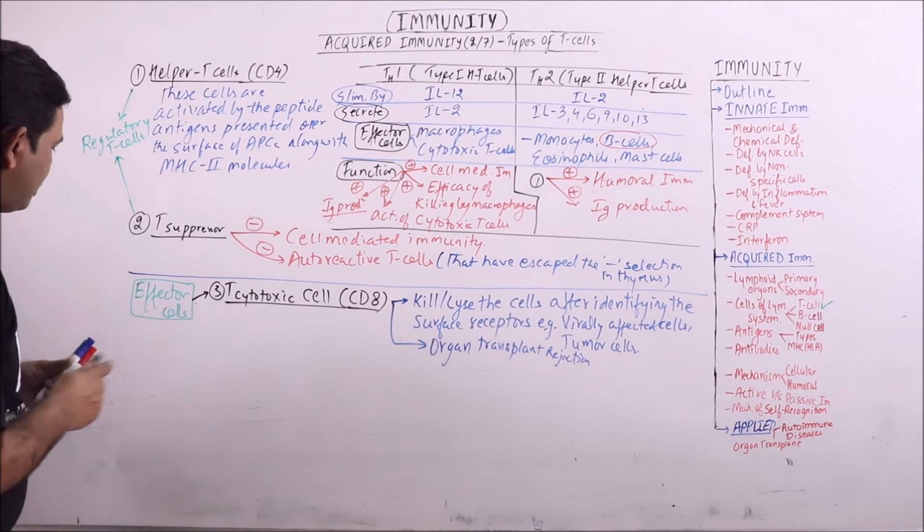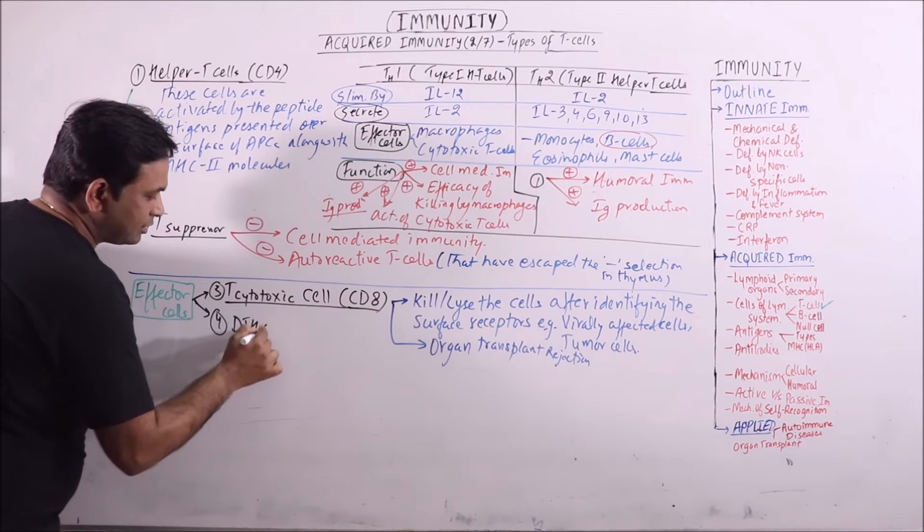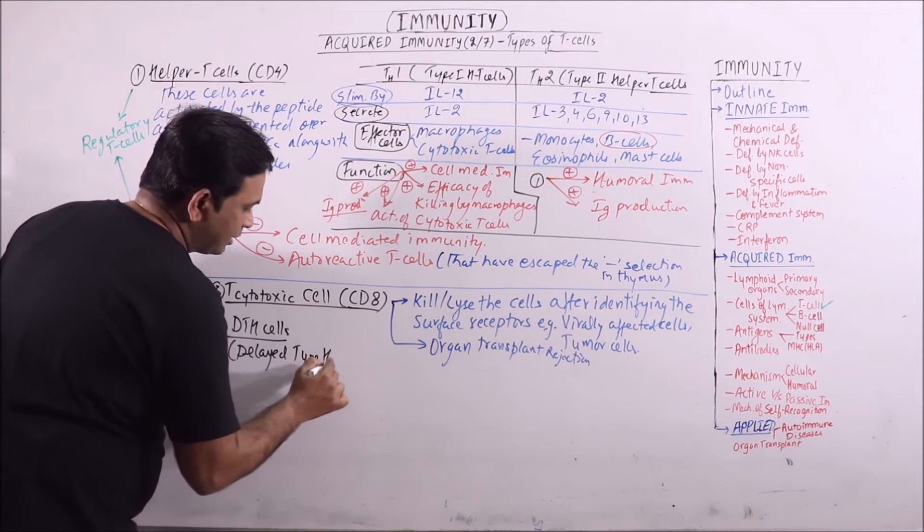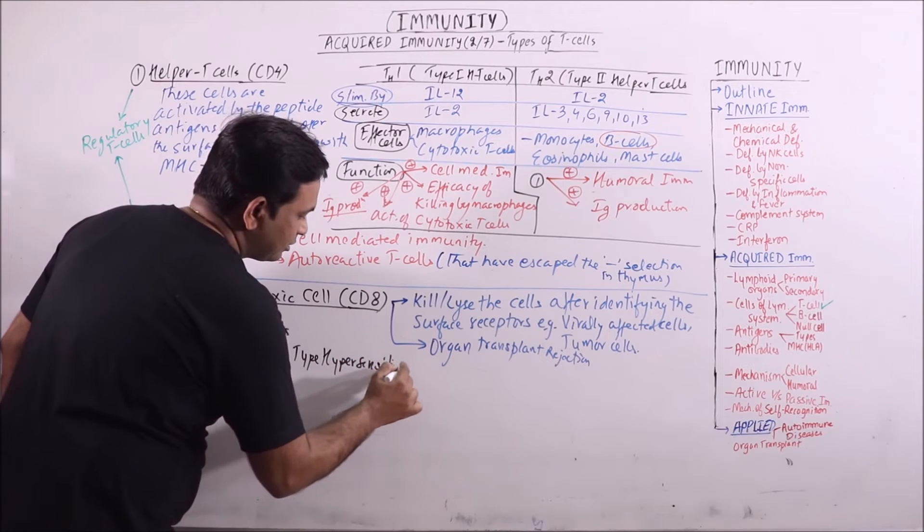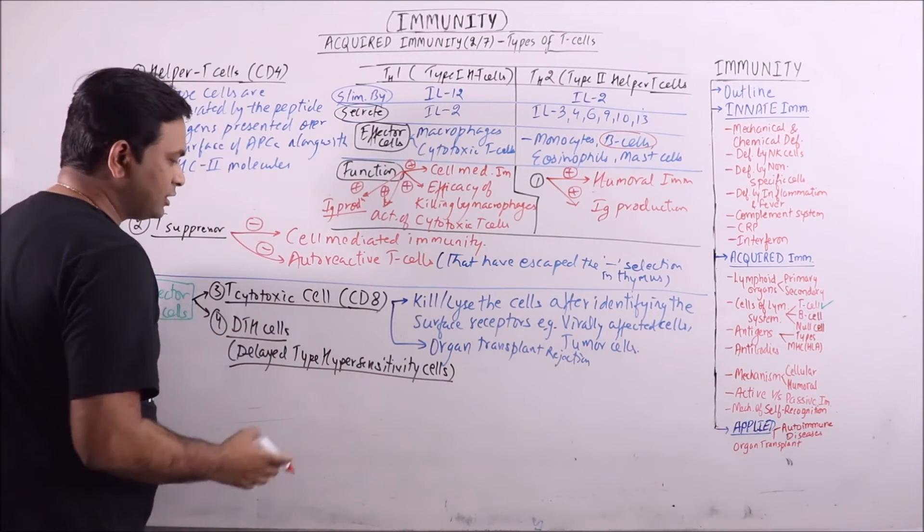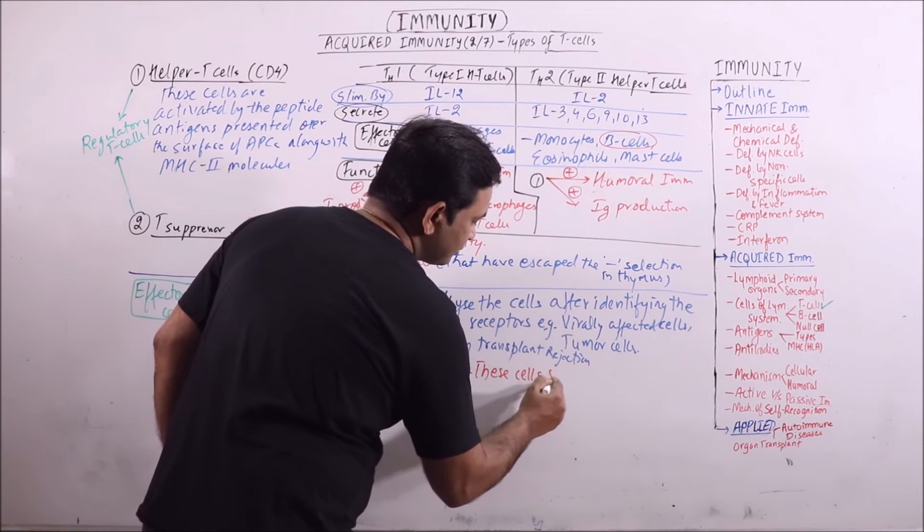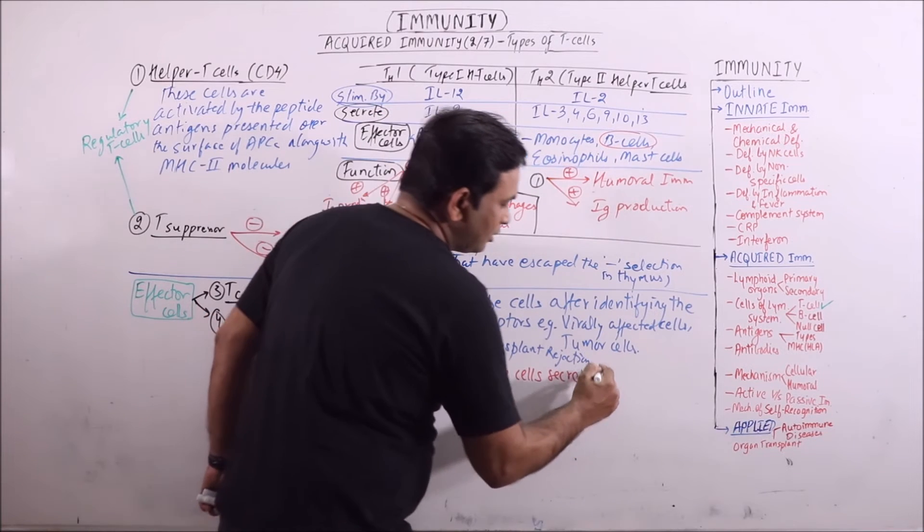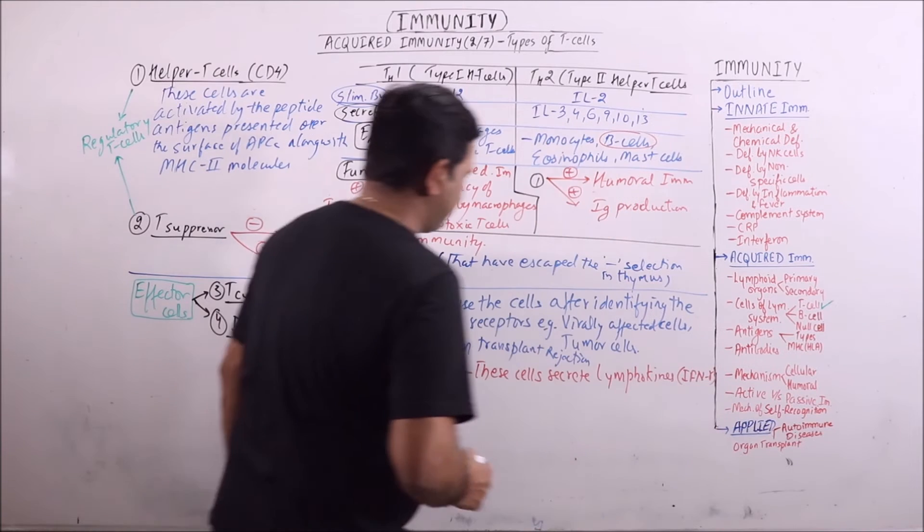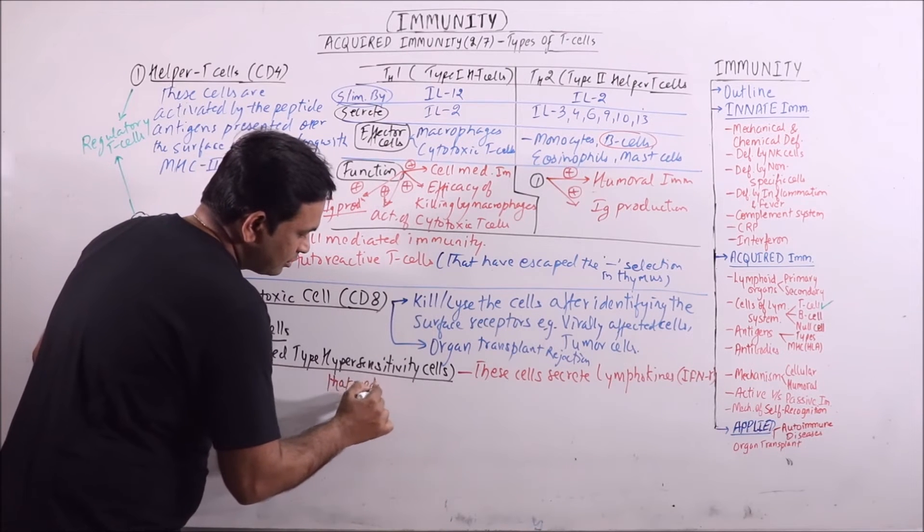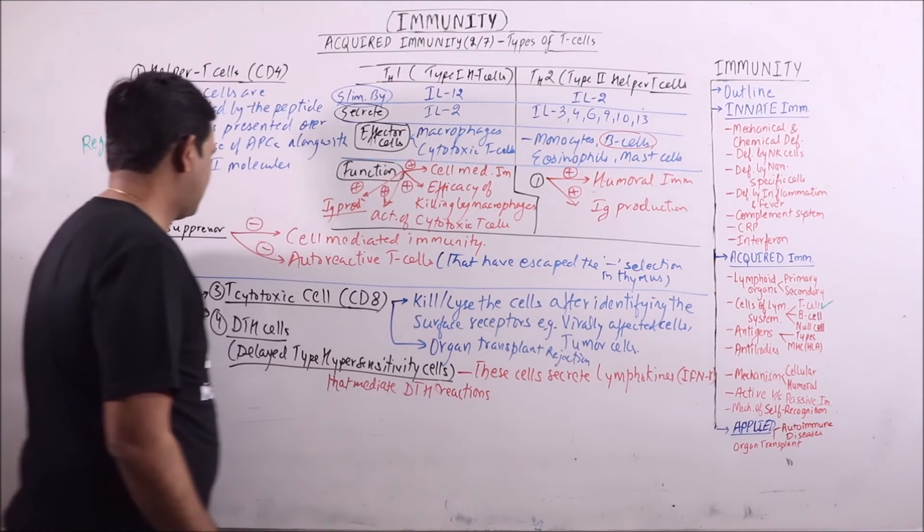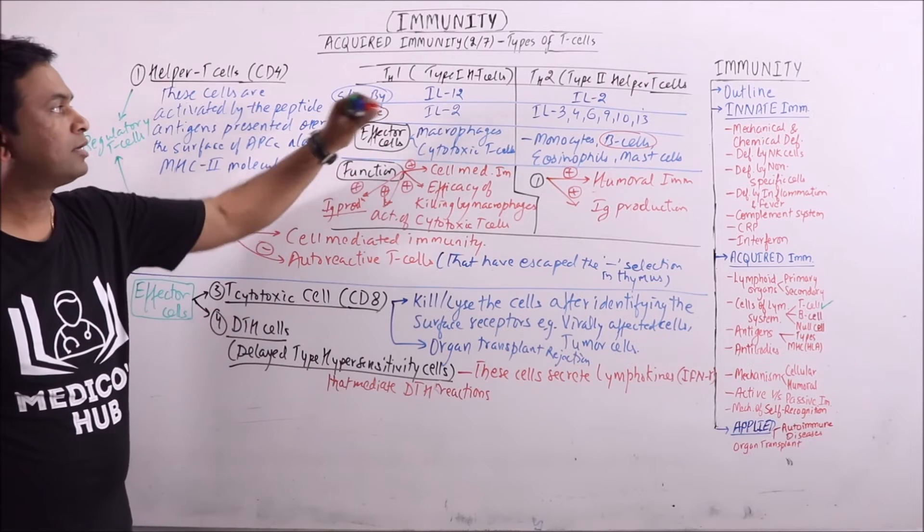Second type of effector cell is DTH cell. These DTH cells are delayed type hypersensitivity cells. What is the function of these cells? These cells secrete lymphokines like interferon gamma that mediate delayed type hypersensitivity reactions. These cells cannot be differentiated from type 1 helper cells on the basis of surface antigens.